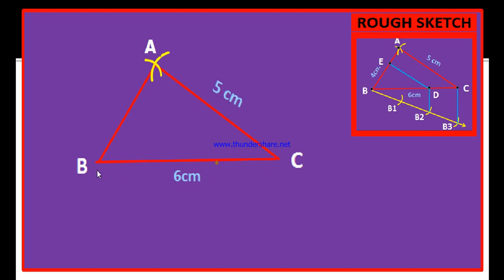After this, now let us construct the ray BX which makes an acute angle with BC. Now, on the ray BX, we have to draw 3 arcs. Why?